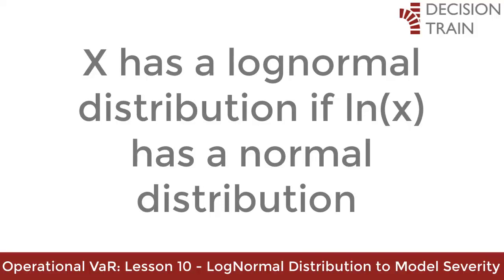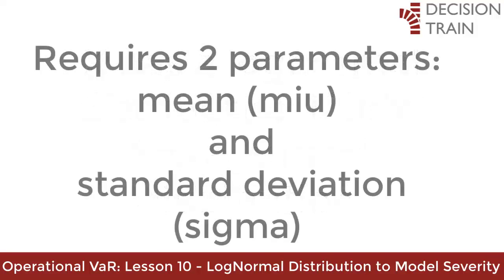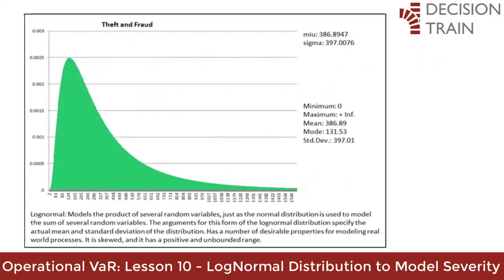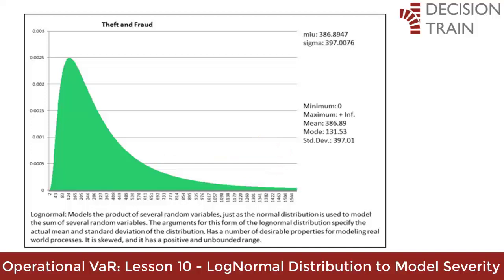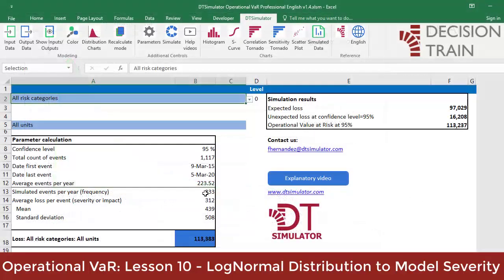By definition, a random variable X has a log-normal distribution if the natural logarithm of X has a normal distribution. Like the normal distribution, the log-normal requires two parameters: the mean mu and the standard deviation sigma. Values of a variable with a log-normal distribution extend infinitely to the right; however, the log-normal does not allow negative numbers. As this is an introductory model, we will use this single distribution, which only requires two known and easily calculated parameters: the mean and the standard deviation.